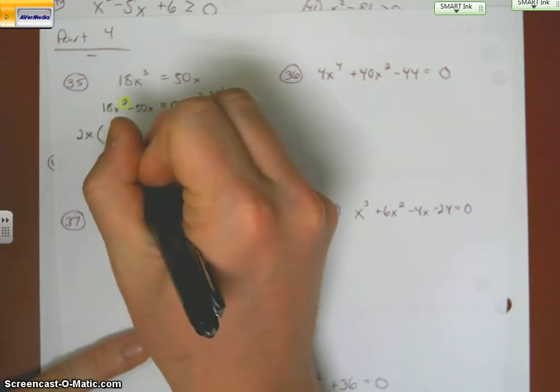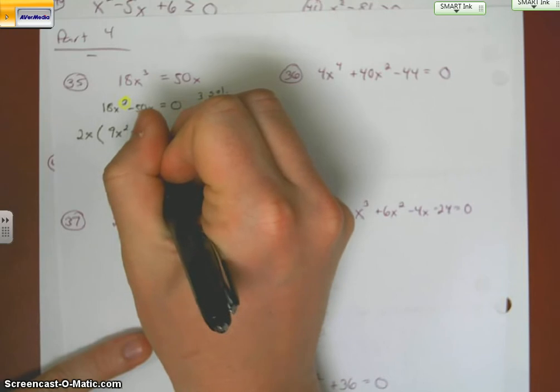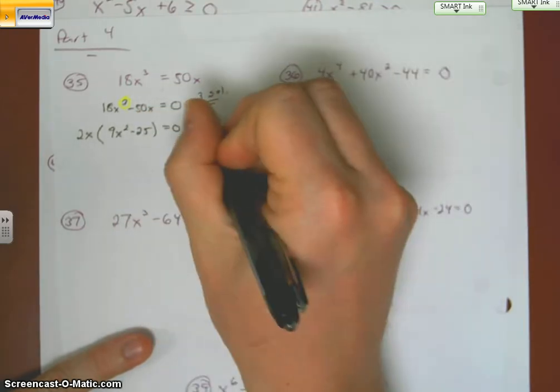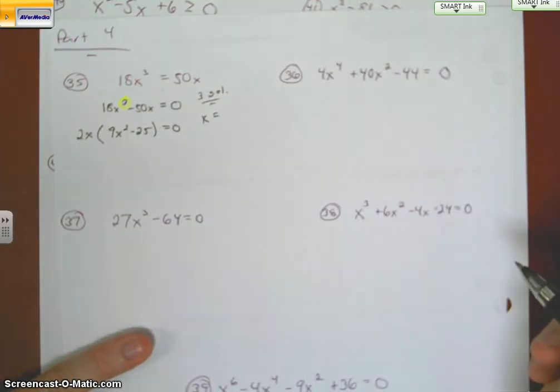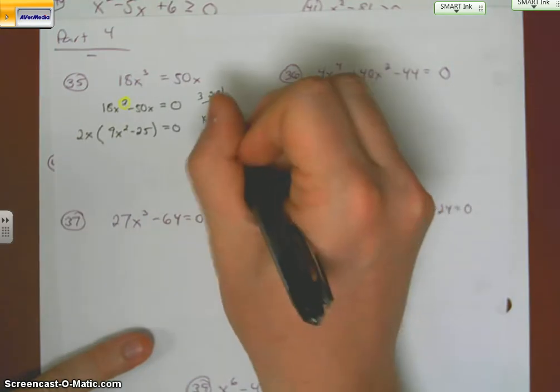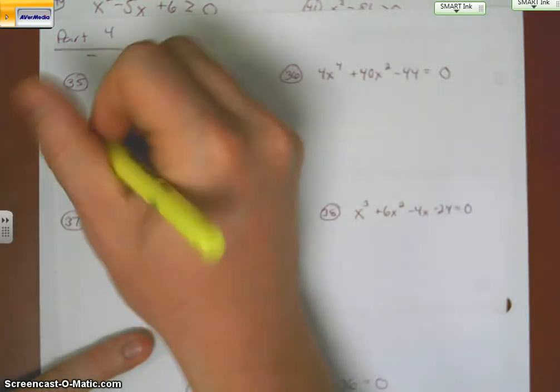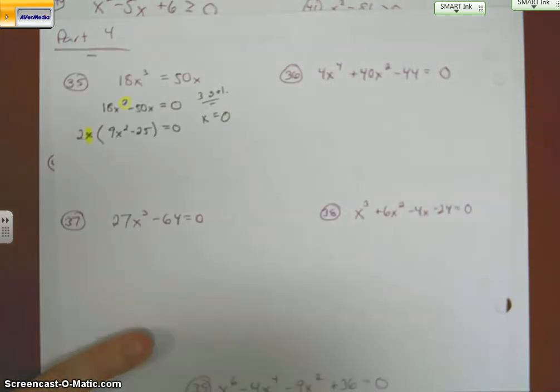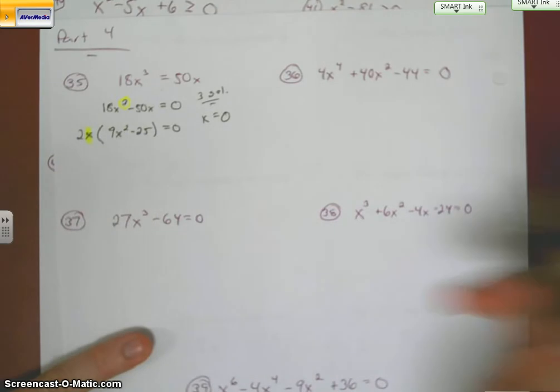So we end up with 9x squared minus 25. Well, right away, I know one of my solutions is zero. That is because my GCF involved a variable. I need two more,